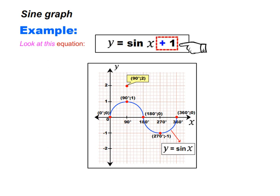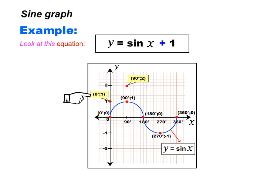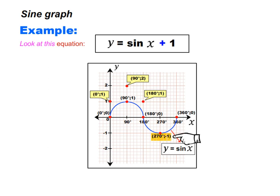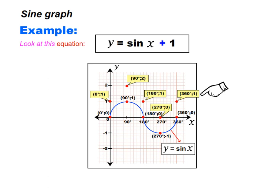Let us add 1 to each y coordinate. 0 degrees and 0 will now become 0 degrees and 1. 180 degrees and 0 will become 180 degrees and 1. 270 degrees and minus 1 will become 270 degrees and 0. 360 degrees and 0 will become 360 degrees and 1. We have plotted our dots — let us now join them using a dotted line. Our complete dotted graph will look like this.